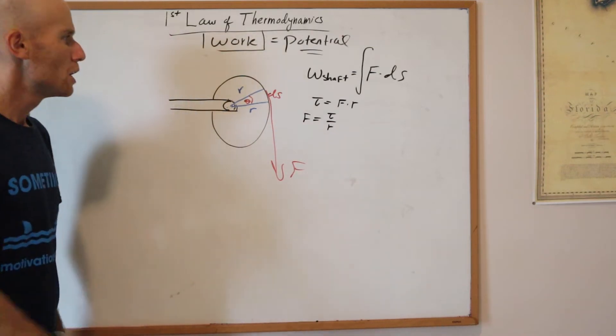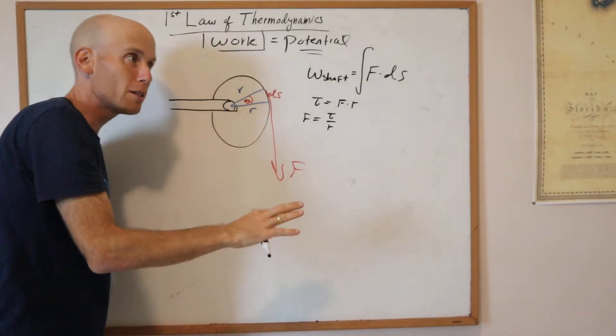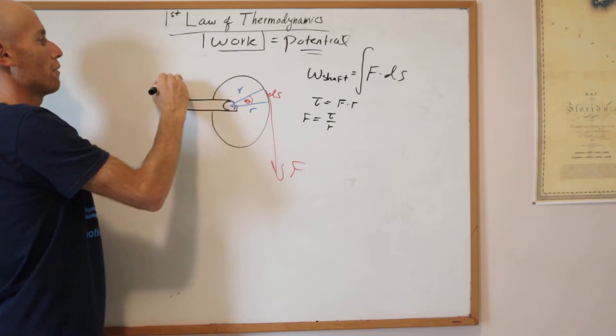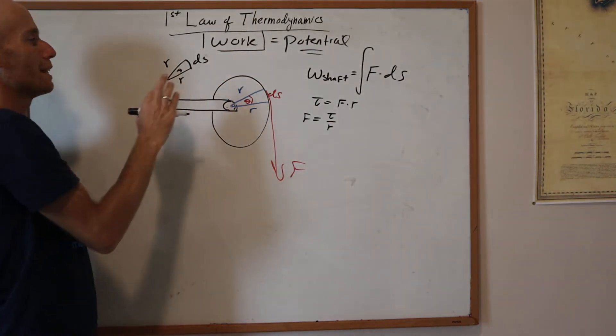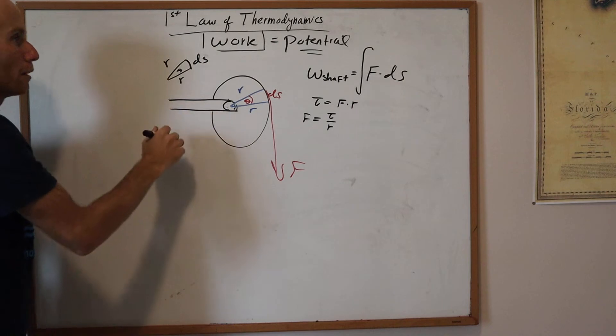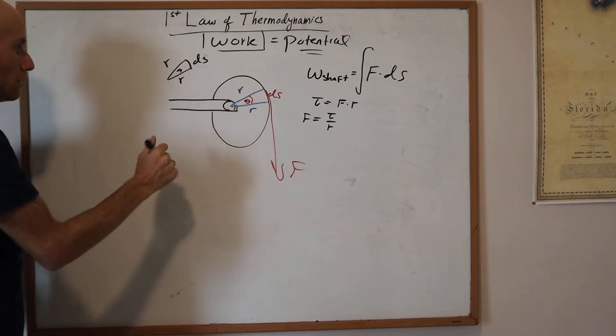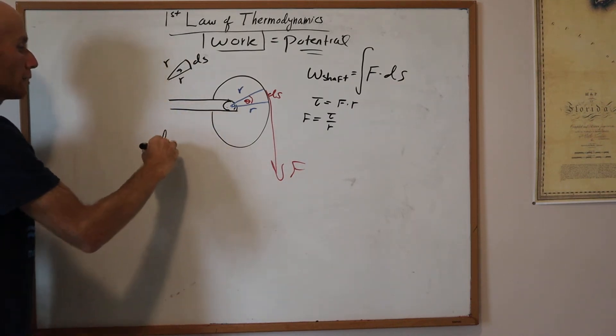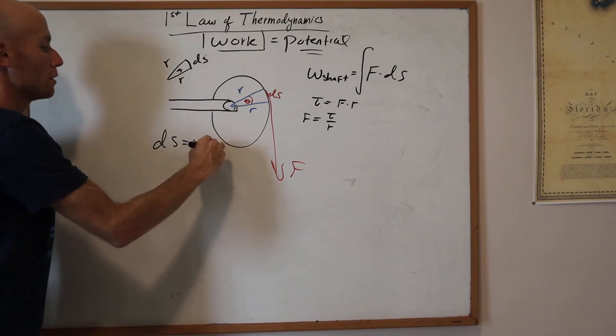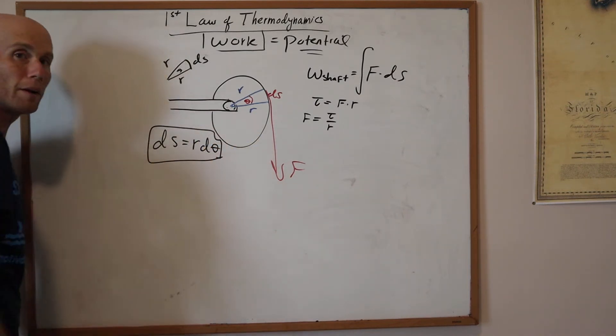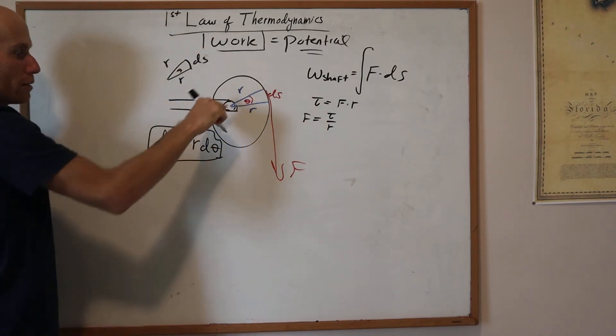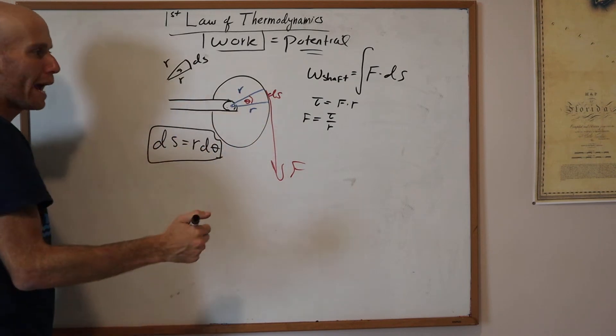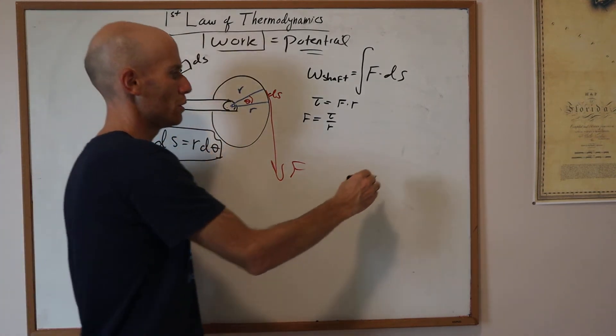That means my force is tau divided by the radius. Strictly speaking from mathematics, if I have a little portion of a circle with an angle, this is r and r, and this is ds, then I can determine that ds is equal to r d theta. The length of this arc is the radius times the change in angle.